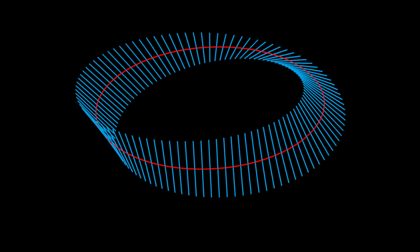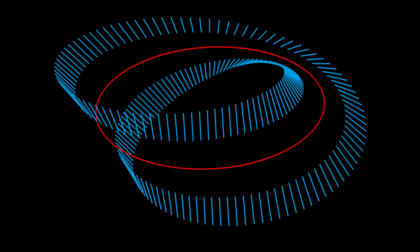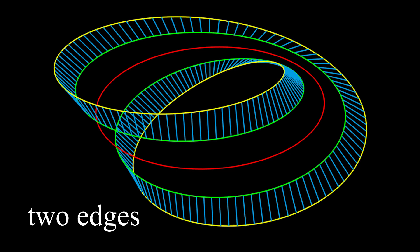We next cut the Mobius strip right down the red line to create a third type of surface. When we separate the Mobius strip along the red circle, notice the result is a single strip, not two. The new strip formed by cutting the Mobius strip has two edges: one edge is the edge of the original Mobius strip, the yellow edge, and the second edge was formed by the cut along the red line, the green edge.